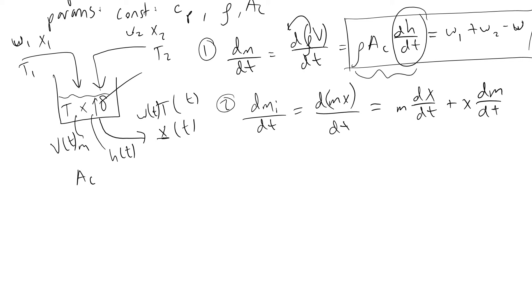The product rule gives us m times dx/dt plus x times dm/dt. At this point we substitute the definition of dm/dt from equation one and algebraically isolate dx/dt to evaluate the left-hand side.